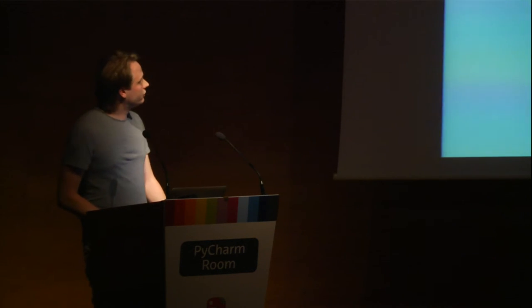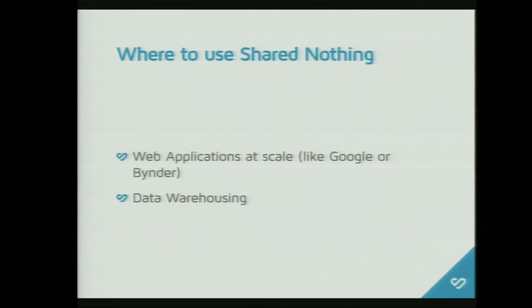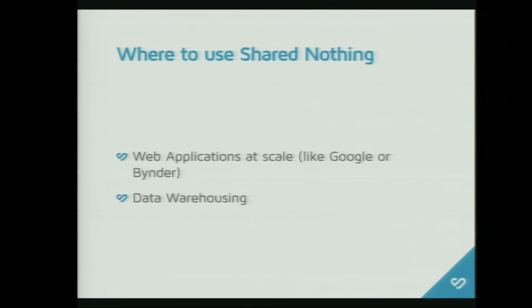So where would you use shared nothing? I know two very good examples: one is Google — I'm pretty sure you all know what Google is — and Binder, which is where I work. At scale, it just means we do a lot of things; it's everywhere, all over the world, all working in cooperation with each other and very scalable. Obviously, data warehousing is also an option by virtue of sharding your data — I'm going to skip that one, but I wanted to list it because this is where it all came from.